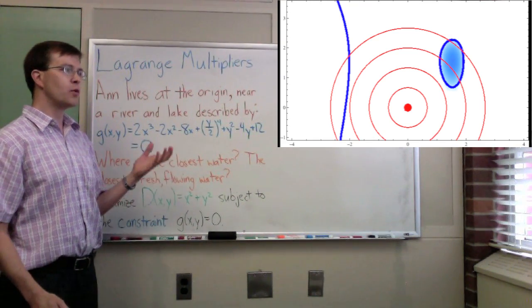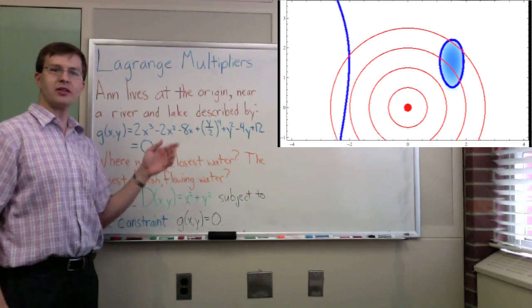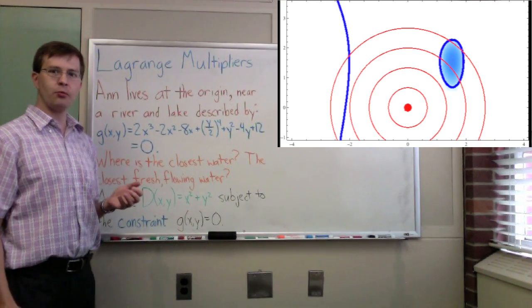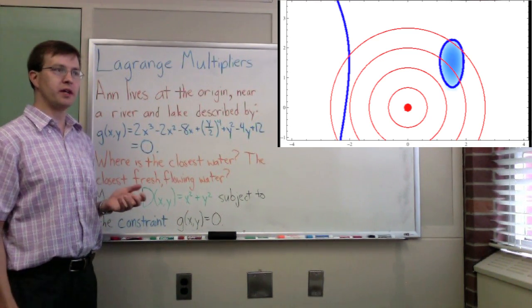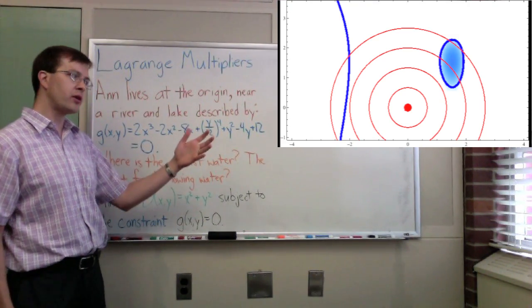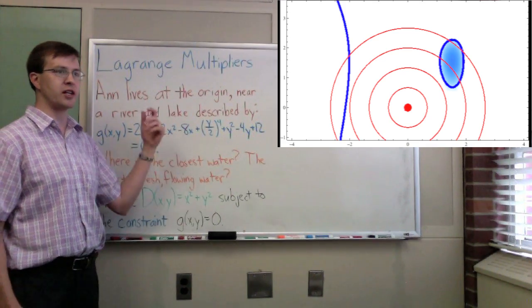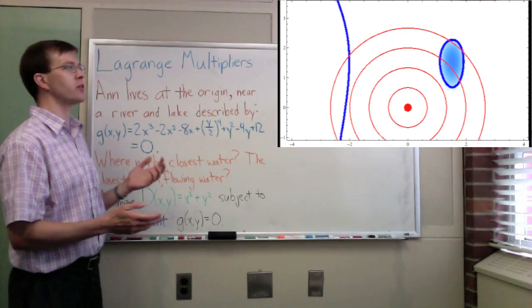And so the question is, which point is going to be closest? Well, if you look at this picture, you can immediately tell that the point that's going to be closest will be the lake rather than the river because as you count outward, the first circle that touches, there's a circle there that touches the lake even before it touches the river. So you can see that generally.